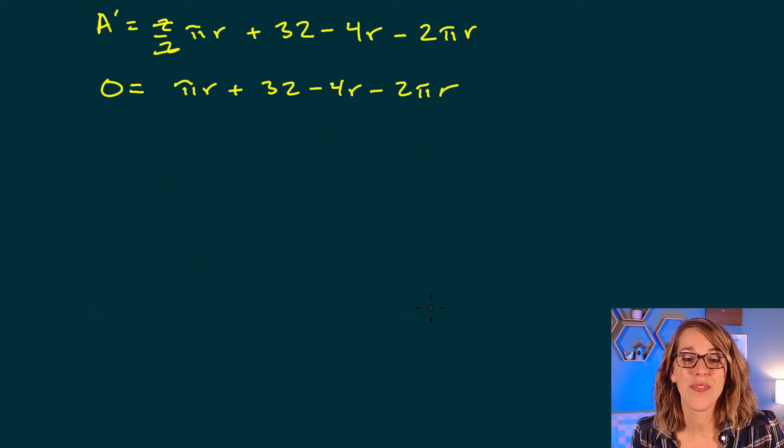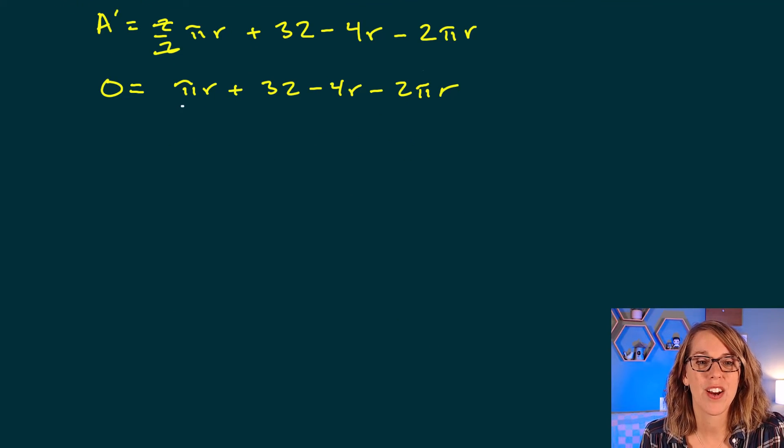So 0 is equal to pi r plus 32 minus 4r minus 2 pi r. Now our goal is to solve for r and we notice that we've got r in a couple of different terms. We've got an r here, here, and here.